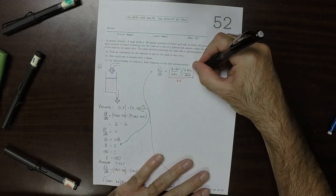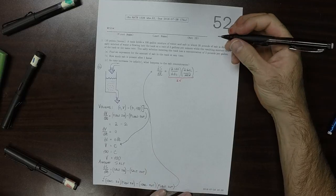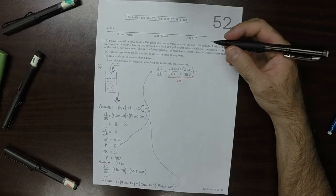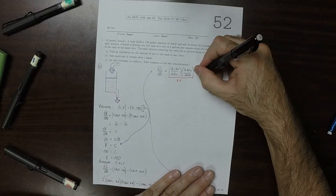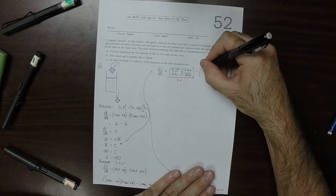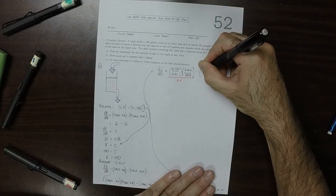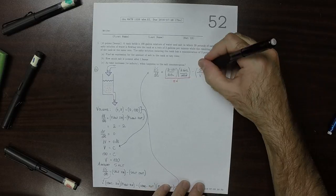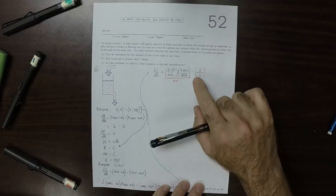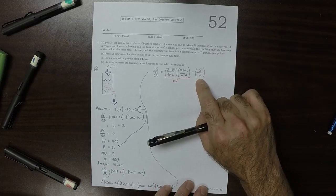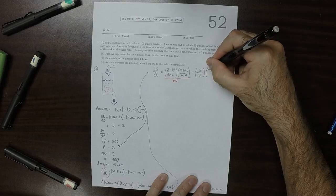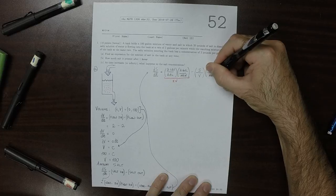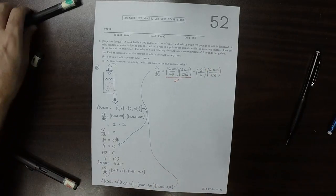So minus what's going out. The concentration going out will be S, however much salt there currently is, which changes in time divided by V, whatever the volume currently is. So that's the concentration, and then the flow out is 2 gallons per minute. So that's what's going out.